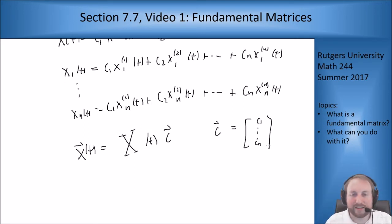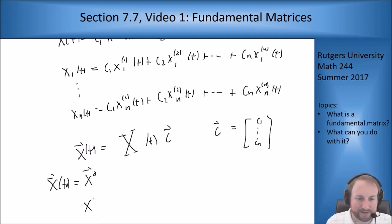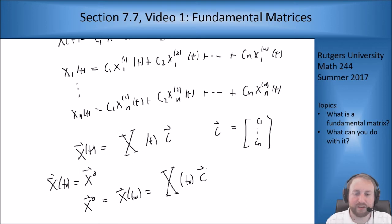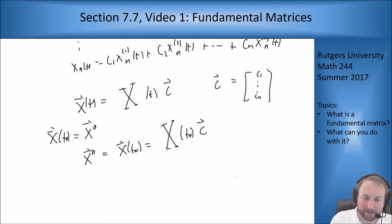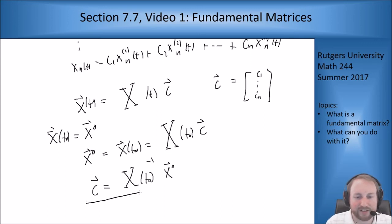Now what does this say for meeting initial conditions? Say I want x(t₀) = x₀, where x₀ models my initial conditions. I can take the equation above and plug in t₀ to both sides: x₀ = X(t₀)·c. Now remember, this matrix X is invertible, so I can invert it to the other side and get that the constant vector c equals X(t₀)⁻¹·x₀. This is more of a theoretical result — normally you'd just plug in and solve the system — but theoretically, if you knew X(t₀)⁻¹, you could just do it this way.